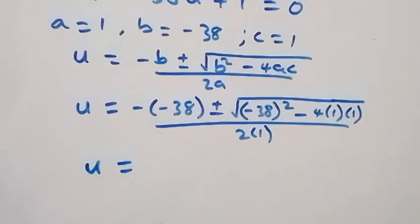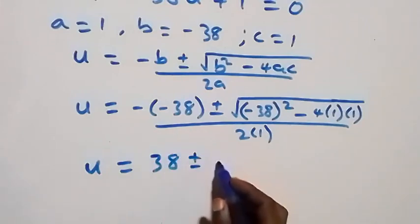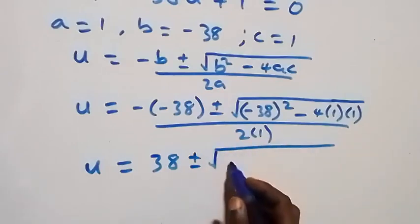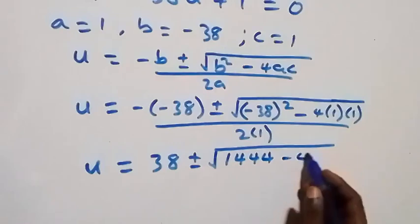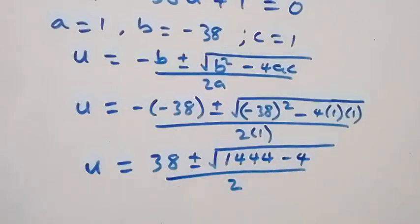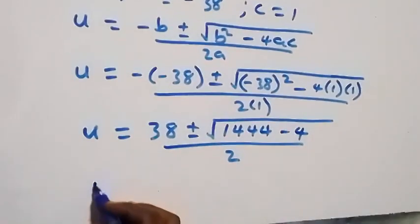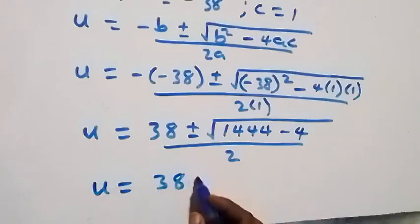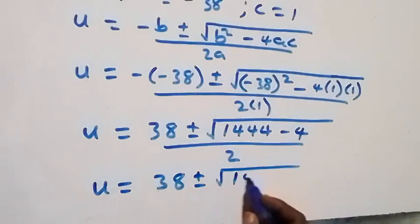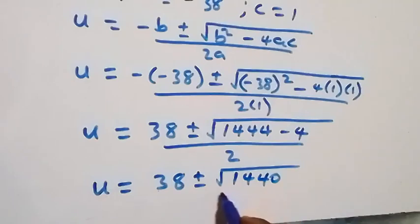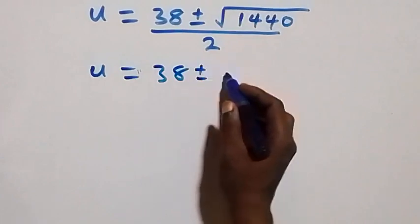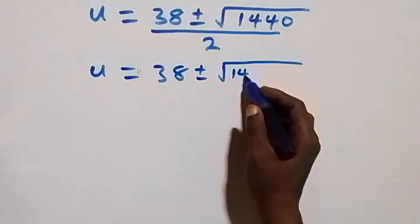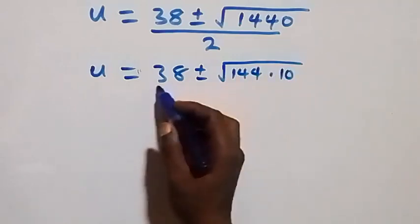Since 38² gives us 1,444, we have u equals (38 ± √(1444 - 4)) / 2, which gives u equals (38 ± √1440) / 2.